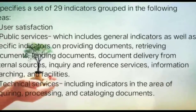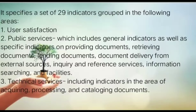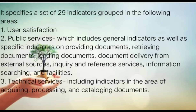It specifies a set of 29 indicators grouped in the following areas: user satisfaction; public services, which includes general indicators as well as specific indicators on providing documents, retrieving documents, lending documents, document delivery from external sources, inquiry and reference services, information searching, and facilities; and technical services, including indicators in the area of acquiring, processing, and cataloging documents.